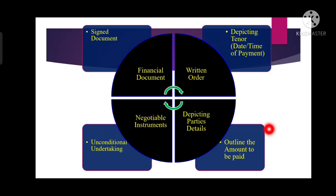The second feature is that it outlines the amount to be paid — there is a specific sum of money which needs to be paid, and that is also mentioned on the bill of exchange. The third feature is that it is an unconditional undertaking — a bill of exchange is an unconditional undertaking. The fourth feature is that it is a signed document — a bill of exchange is an instrument which is signed by the drawer and accepted by the drawee.